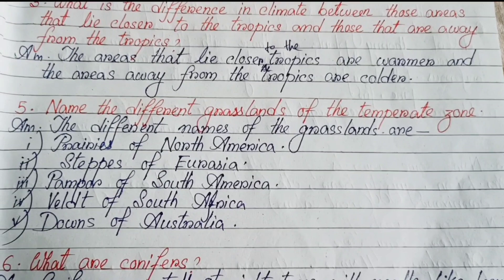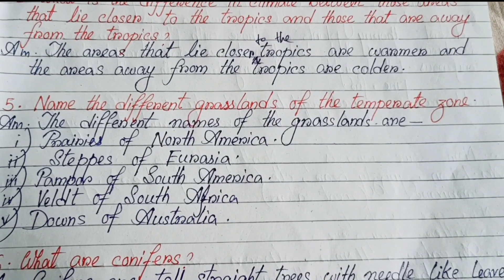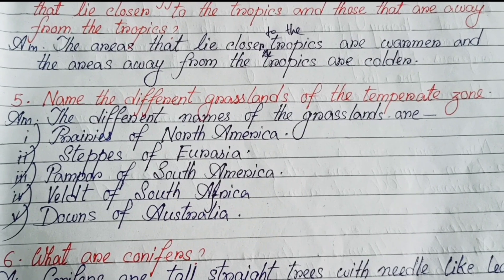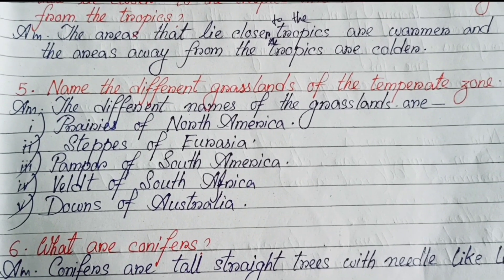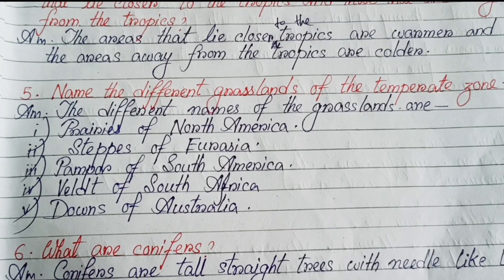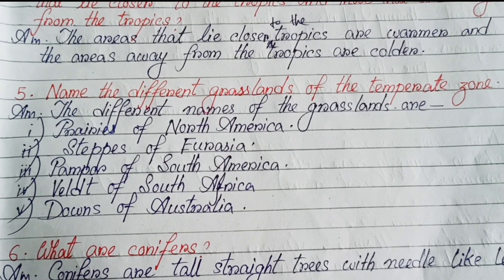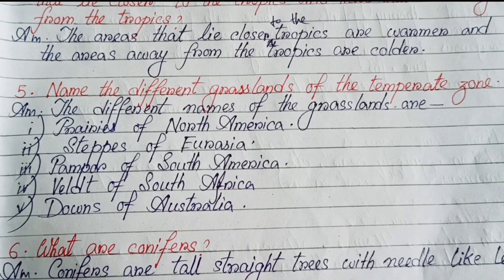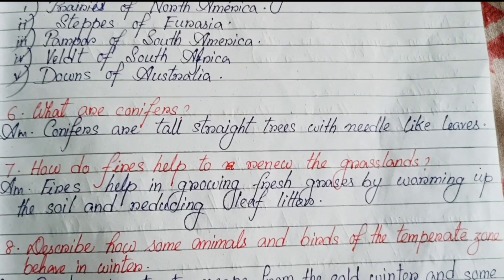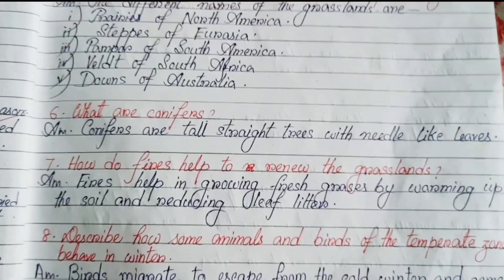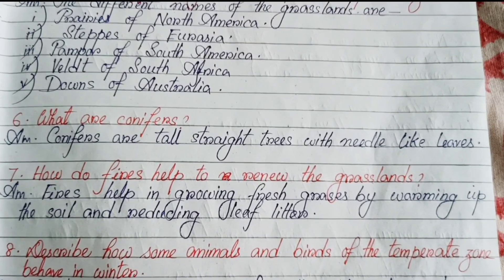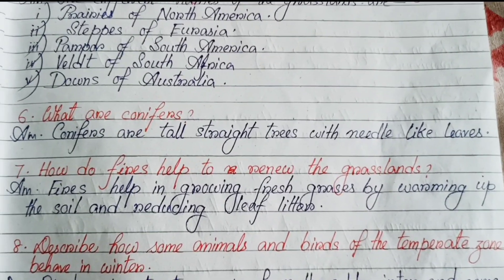Number five: name the different grasslands of the temperate zone. The different names of grasslands are: Prairies of North America, Steppes of Eurasia, Pampas of South America, Veld of South Africa, and Downs of Australia. Number six: what are conifers? Conifers are tall, straight trees with needle-like leaves.